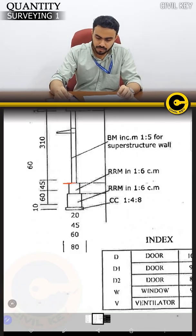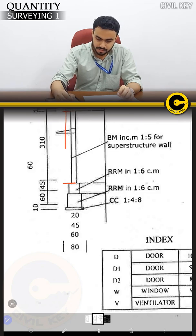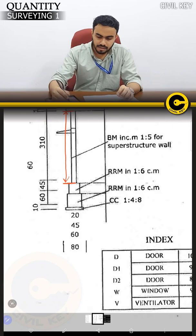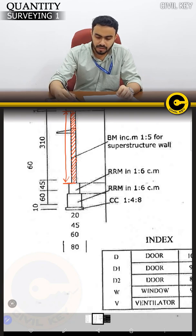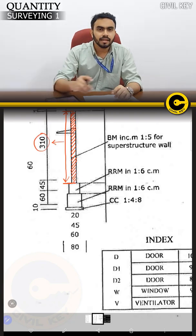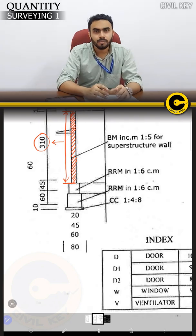I'm looking at the floor level up to the top of the roof. This is the top height. This is the bottom height, giving us the total height of the wall.